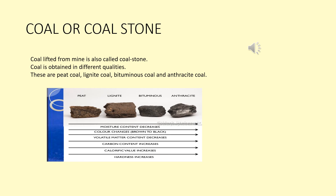Bituminous coal commonly burns with a flame and smoke. Anthracite coal burns with little smoke but without flame. Anthracite coal has a high ignition temperature, so its use as fuel is limited, because very soon it could lead to an explosion.